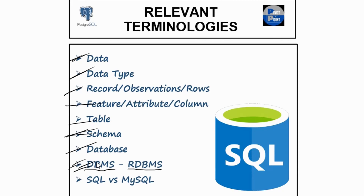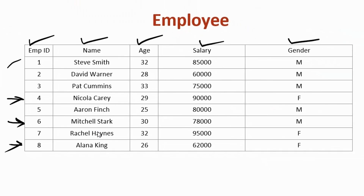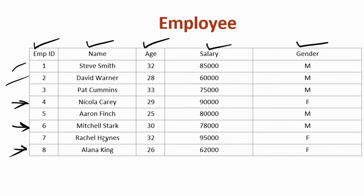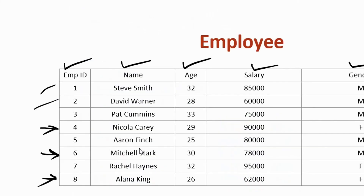Let's move on to the topic of RDBMS. RDBMS, with the property of handling or dealing only with relational data, is called a Relational Database Management System. In case you still have any confusion understanding what a relational database is — it is nothing but data in the form of rows and columns, like we have seen in this example. There are other types of databases as well, but relational databases are one of the most widely used.